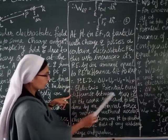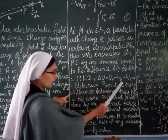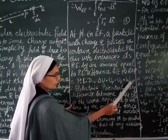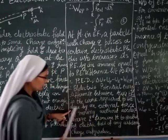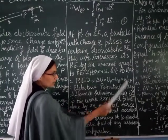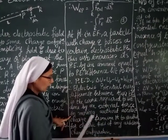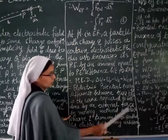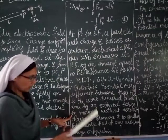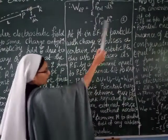The electric potential energy difference between two points P and R is the work done W_RP, required to be done by an external force, bringing the charge without acceleration — meaning with very slow speed — so that we take small displacement dR and there is no acceleration.